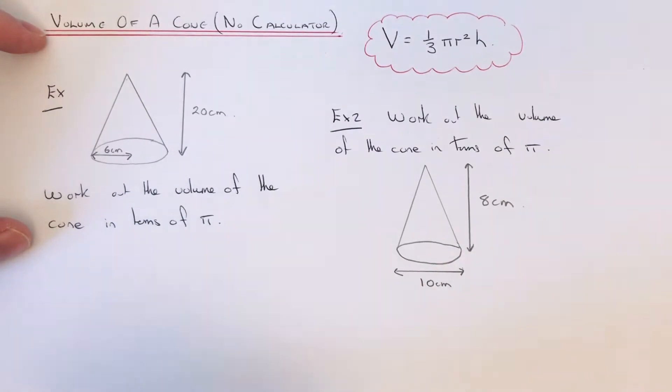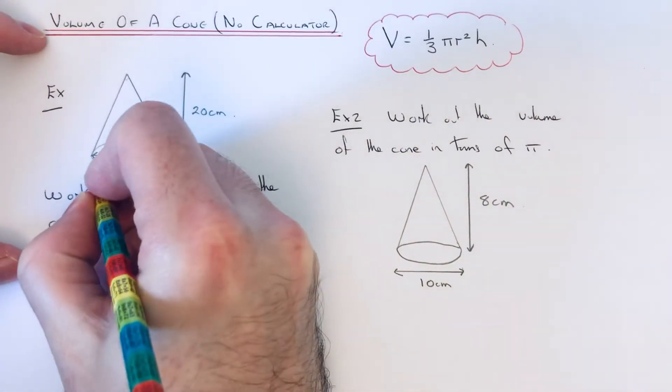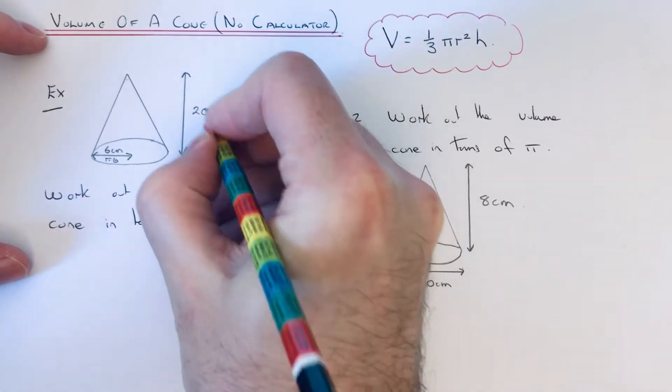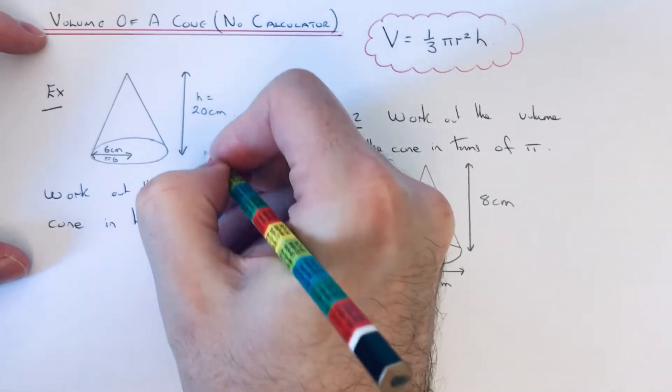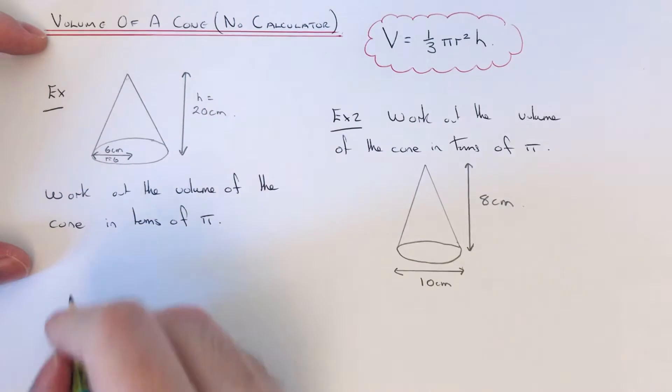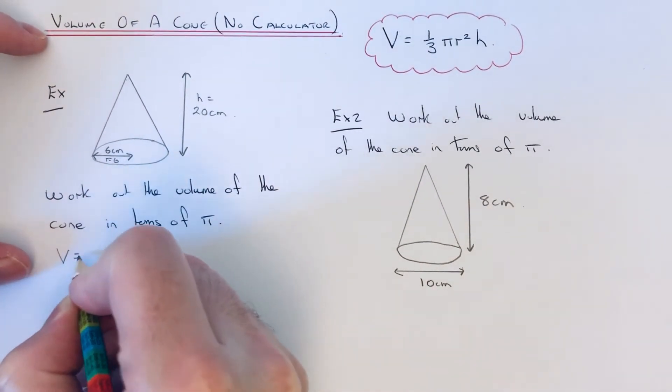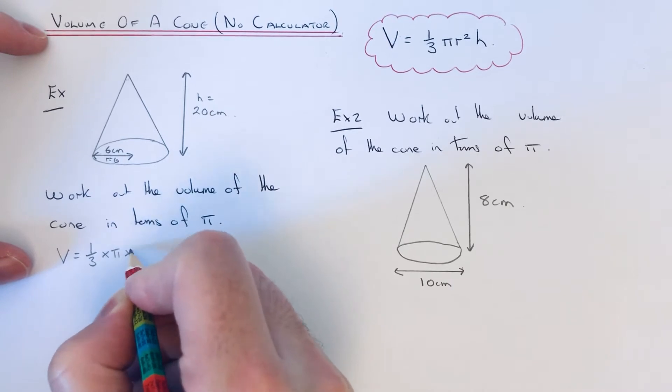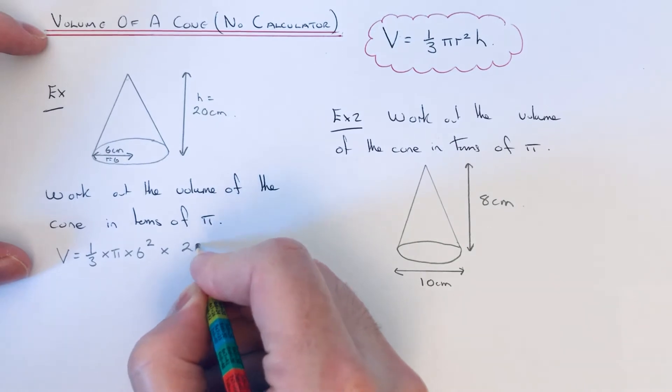Let's have a look at the first example. We're going to work out the volume of the cone in terms of pi. Our radius is 6 and our height is 20. So we can put these straight into our formula for the volume: one third times pi times 6 squared times 20.